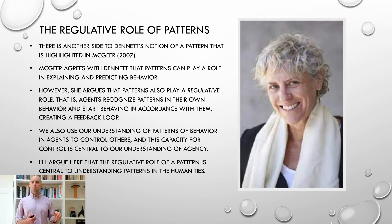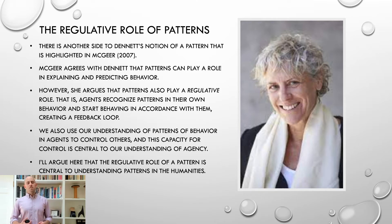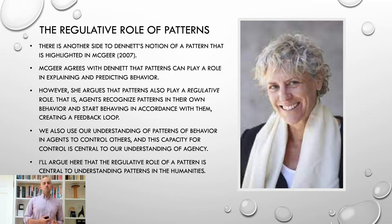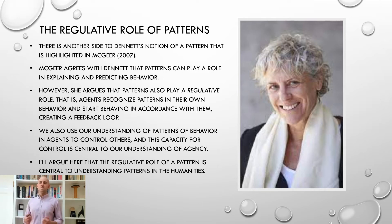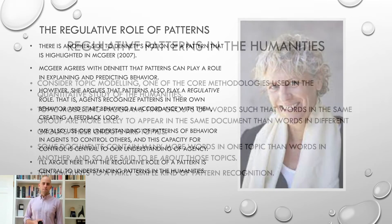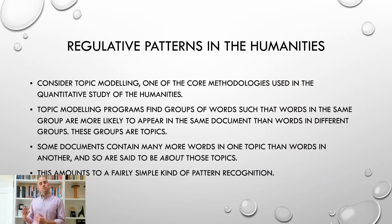We can also use our understanding of patterns of behavior in agents to control other agents — we can predict and explain what agents will do and in doing so control them to some degree. We can also control ourselves, as I was discussing before. This broad capacity for control is really central, McGear argues, to our understanding of agency. And I'll argue here that this regulatory role of a pattern is central to understanding how patterns work in the humanities, and it's particularly important for the quantitative study of the humanities.